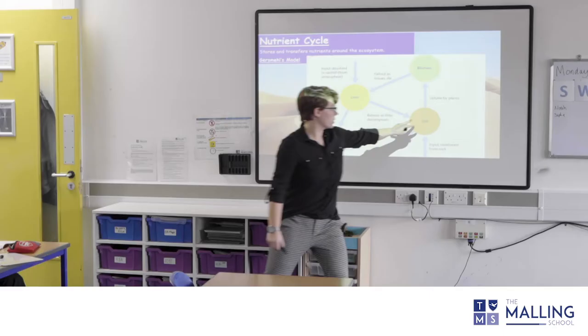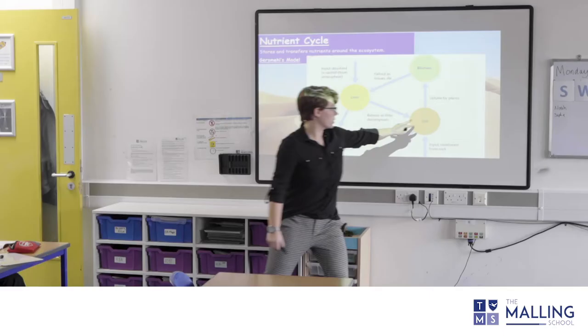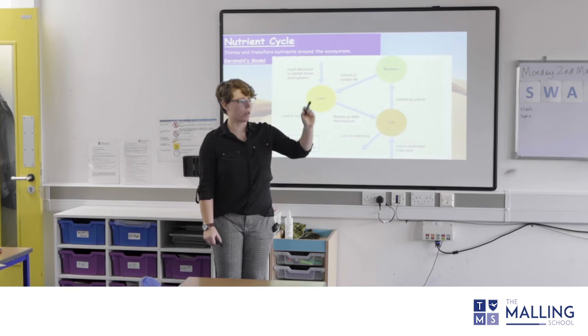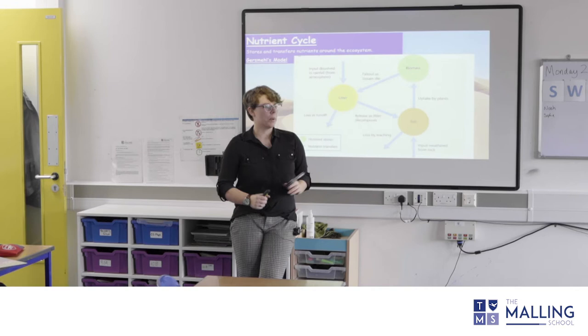The soil moves towards the biomass. The arrow represents the transfer of nutrients. The circle represents where they're stored. So the biomass — the nutrients then go into something called litter.